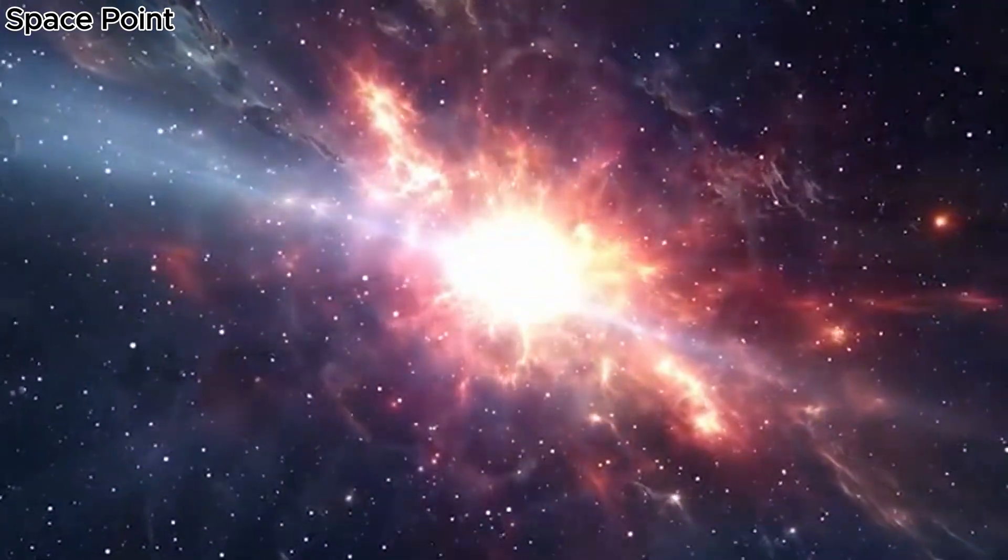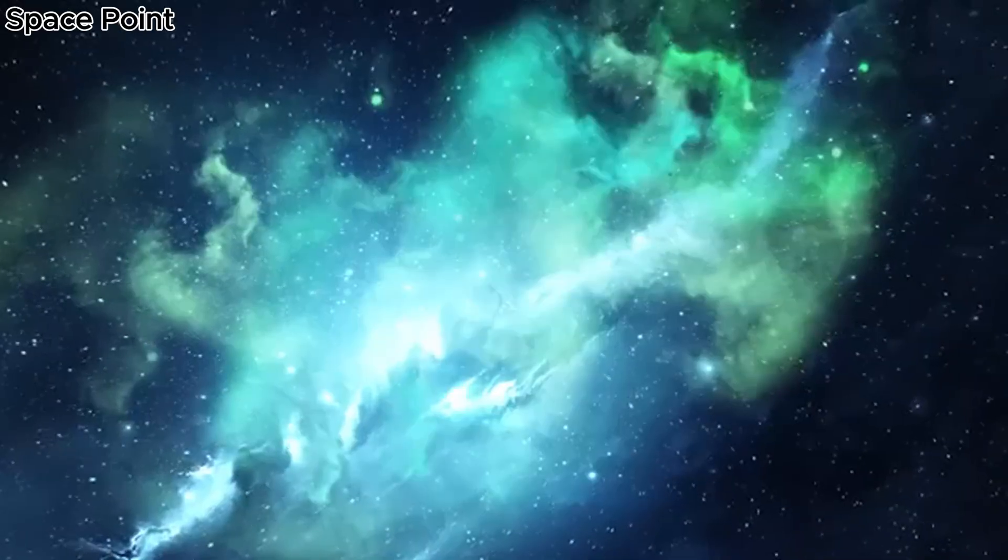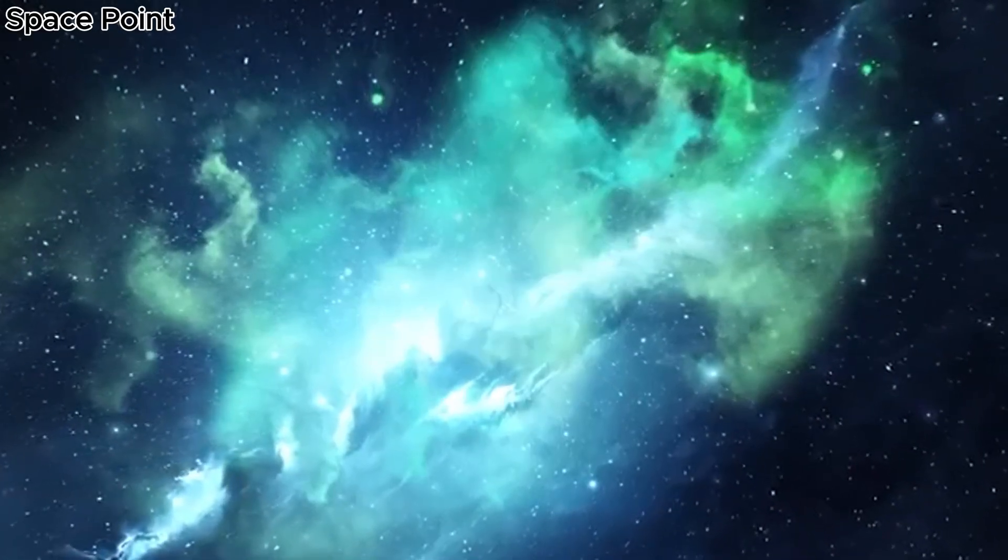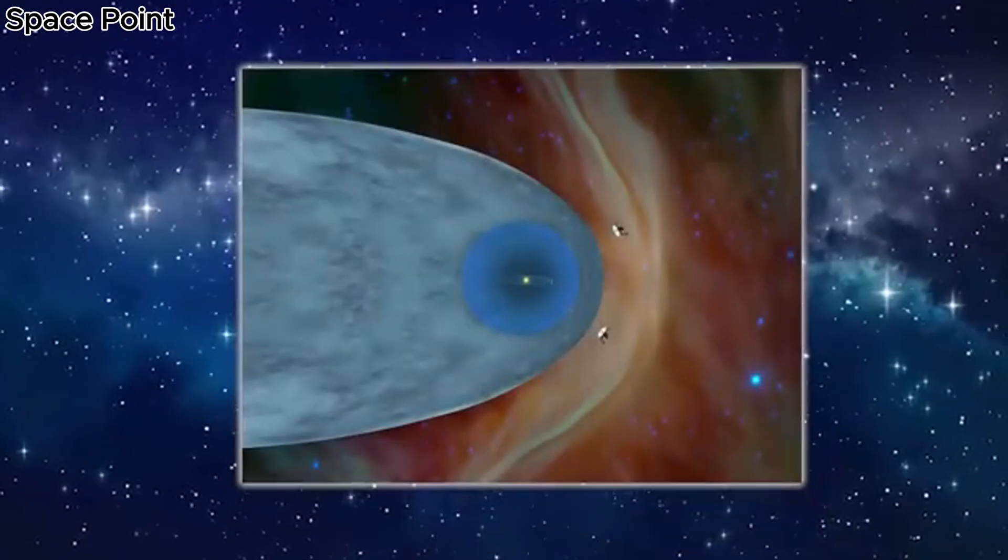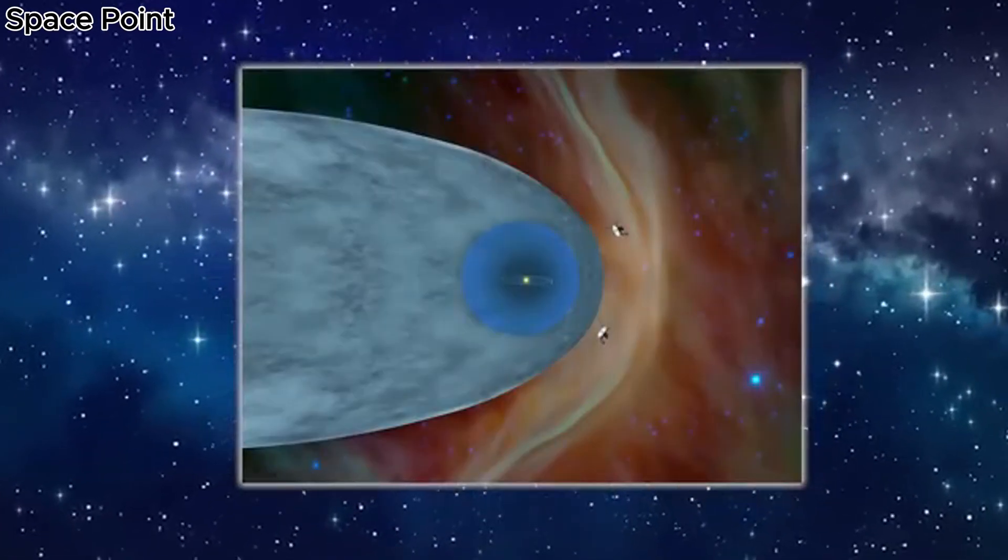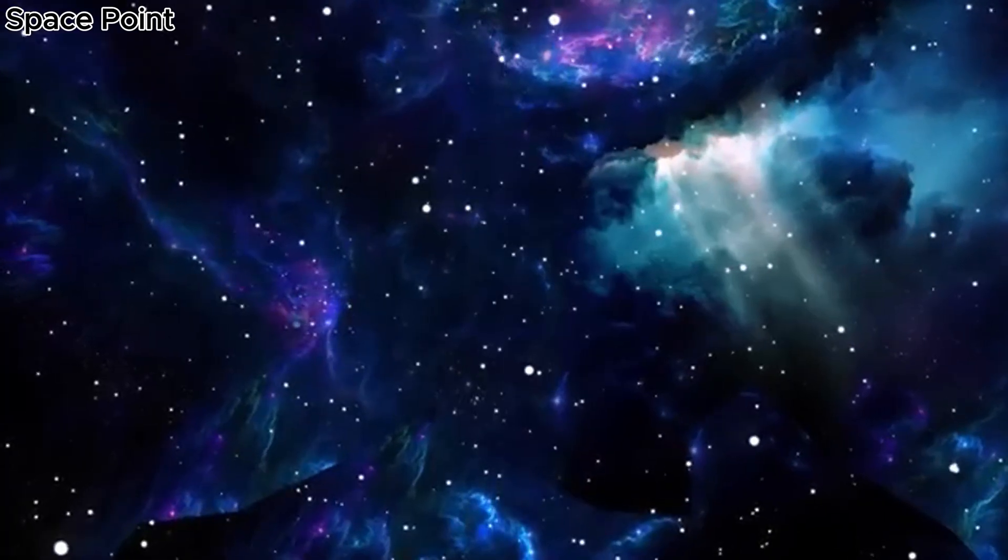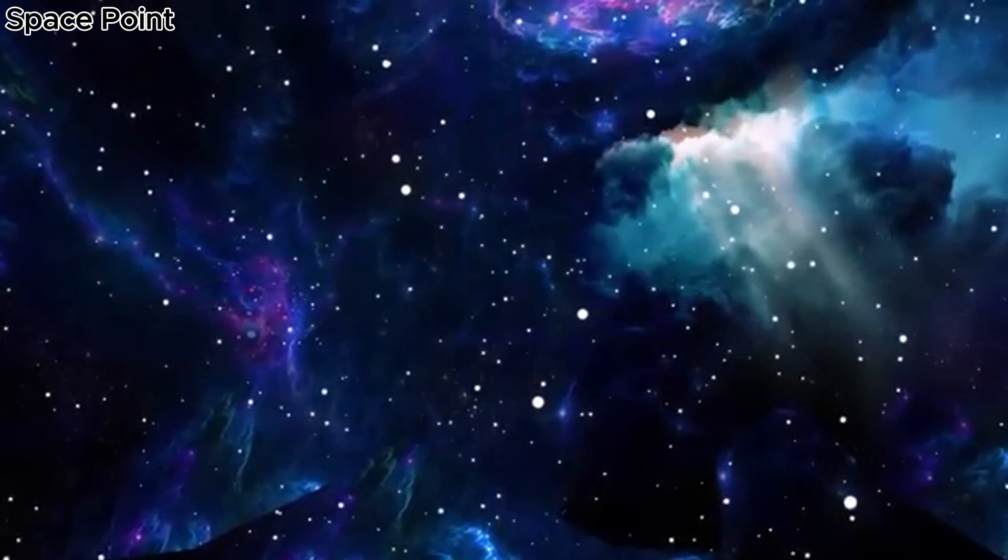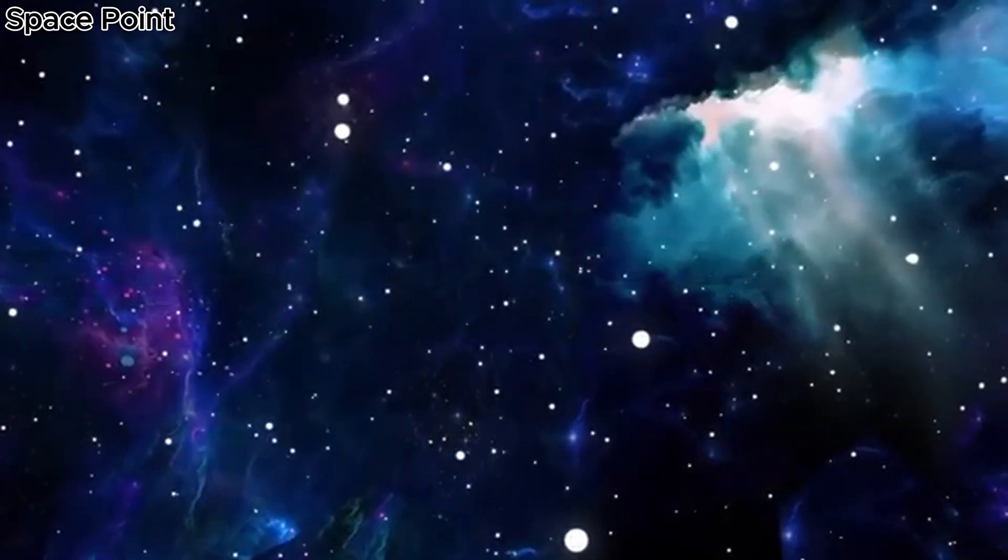For decades, interstellar space had been considered relatively featureless. Voyager 1 had crossed the heliopause in 2012, entering what many thought would be a long, quiet drift through a sea of sparse hydrogen atoms and cosmic rays. But what it's now navigating is far from featureless.